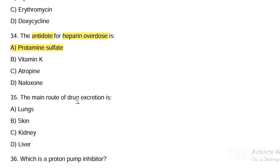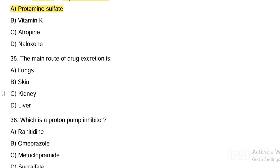Next question. The main route of drug excretion is: Option A, lungs. Option B, skin. Option C, kidney. Option D, liver. Answer: drug excretion is via the kidney; drug metabolism is in the liver.